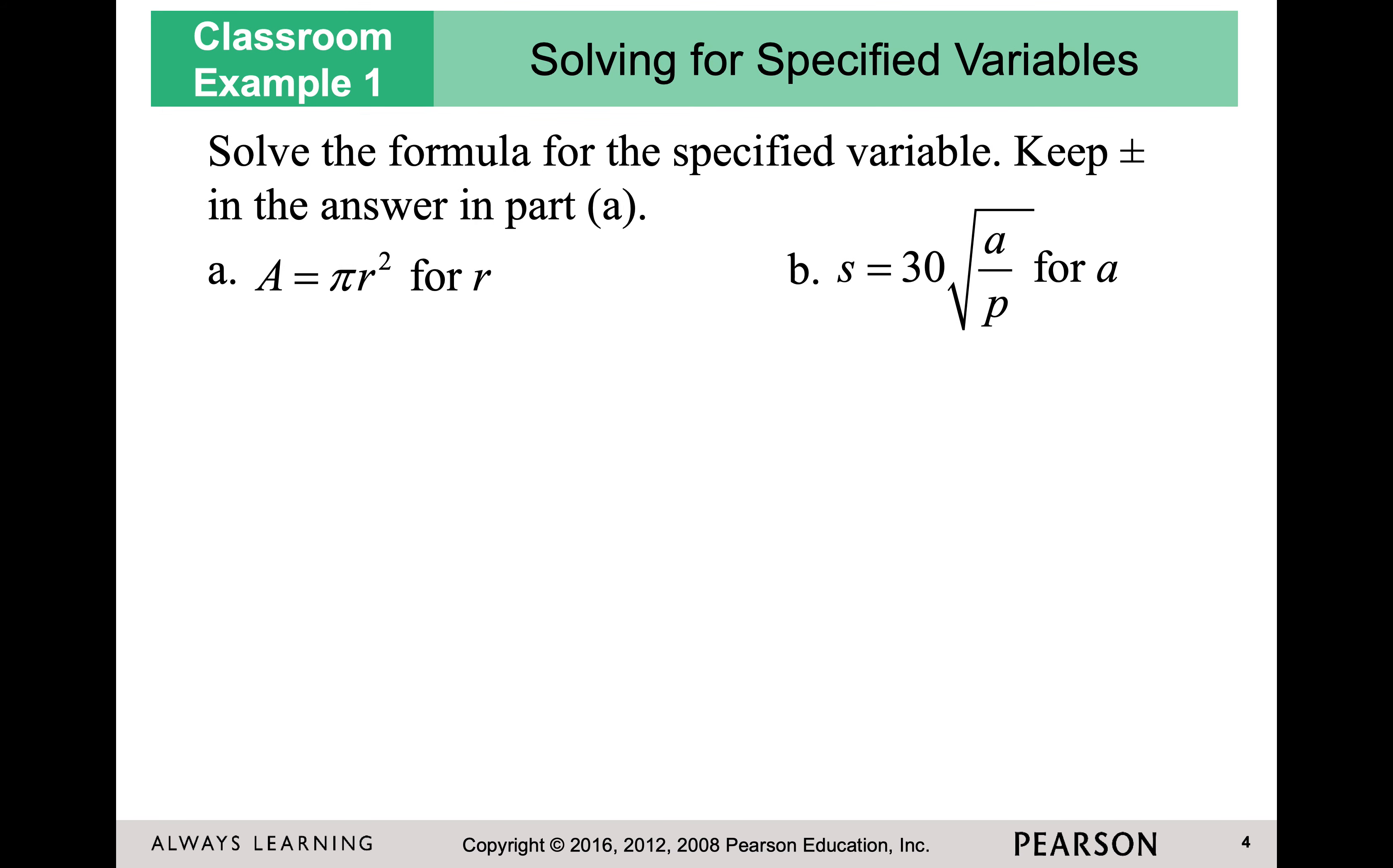First, we're going to take a look at solving formulas. So when I'm solving formulas, I want to isolate a variable. And in this case, in part a, I want to isolate r, but I don't have numbers. I have variables. And technically, pi is a number, but it's not something like 2x. So if I wanted to get r squared by itself, I would treat that pi like it was a 2. I would divide both sides by pi.